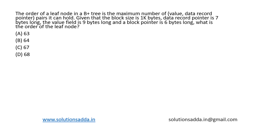This is a question from database. The order of a leaf node in B plus tree is the maximum number of value and data record pointer pairs it can hold.